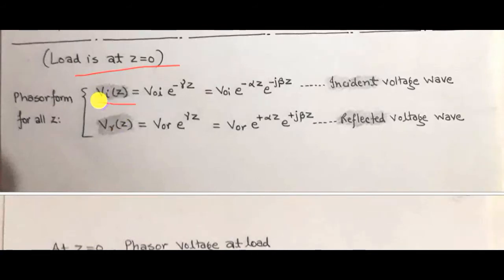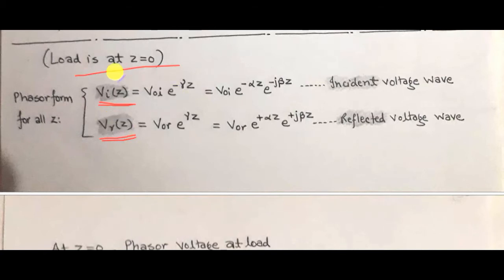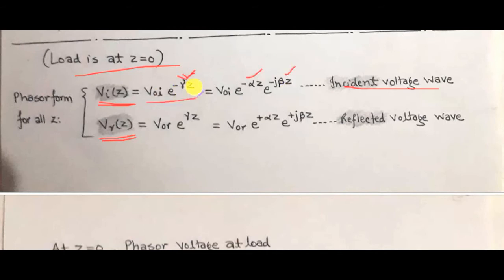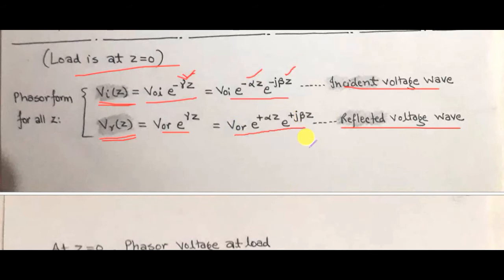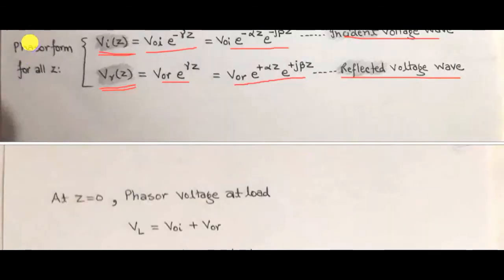At the complex load impedance at Z equals 0, the incident voltage is reflected back. The incident voltage is denoted V_i and the reflected voltage by V_R — both are functions of position Z. The incident voltage wave is V_naught_I times e to the power minus gamma Z, where gamma is the propagation constant equal to alpha plus j·beta. The reflected voltage wave is V_naught_R times e to the power plus j·beta Z. These are the phasor forms of the voltage waves.